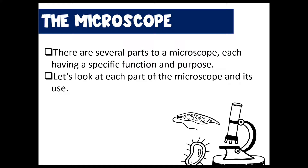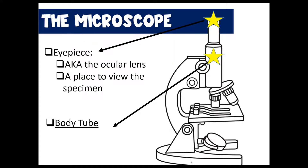There are several different parts to the microscope. We're going to go through each part and talk about the function and purpose of those parts. We'll start with the eyepiece, which is at the top of the microscope. Sometimes it's called the ocular lens — both names are interchangeable. This is where the specimen is viewed. You also have the body tube, which moves the magnified image up to the eyepiece and provides distance between the objective lens and the eyepiece.